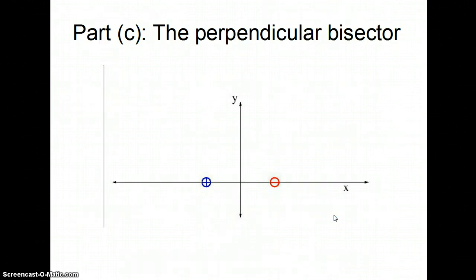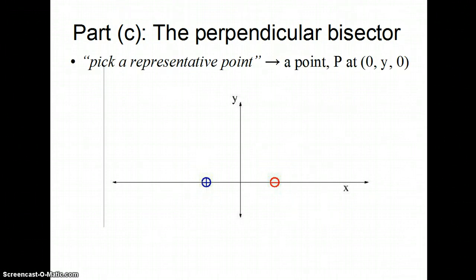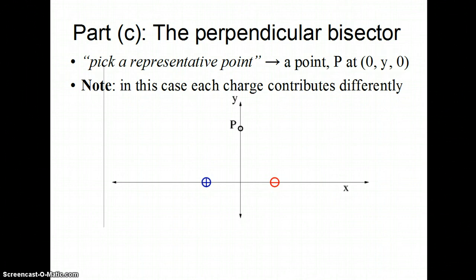Part C asks about the perpendicular bisector, in my opinion probably the most interesting piece. When I pick a representative point, that point's at 0y0 in this picture. Note, in this case, these unit vectors are pointing in very different directions. The lines between my charges and my test charge go in very different directions. There is a lot of symmetry though, and it tells us many things.